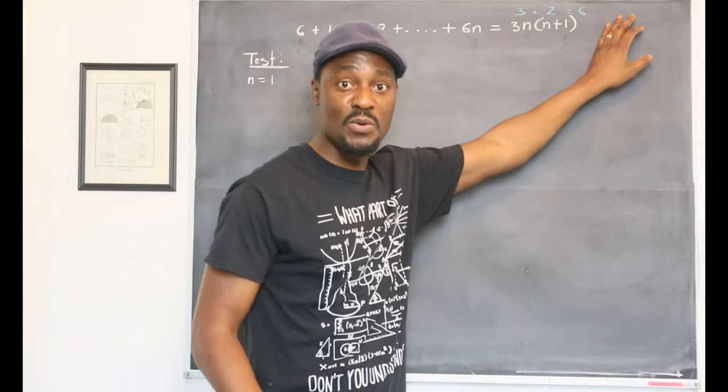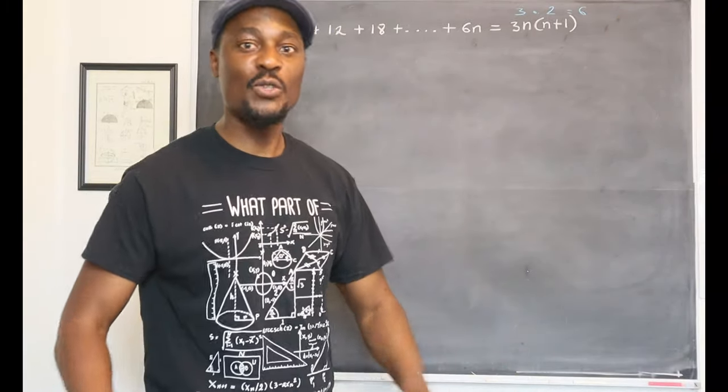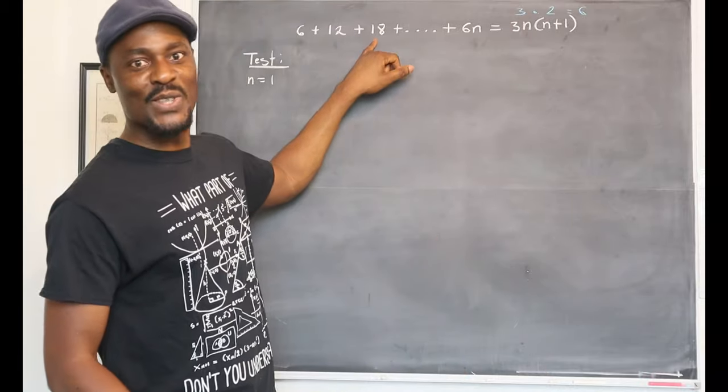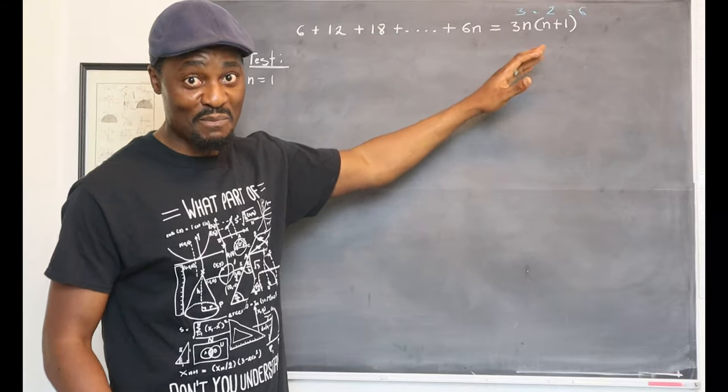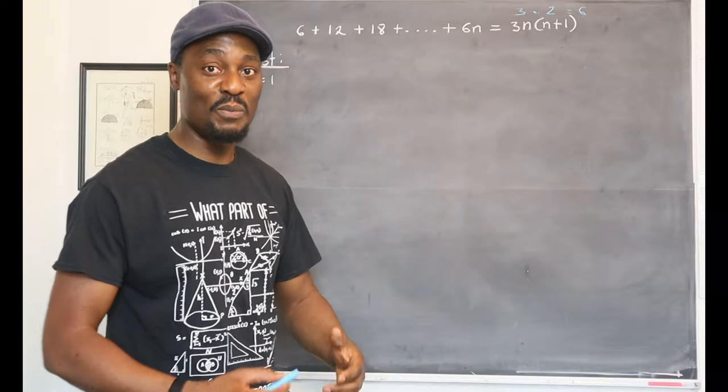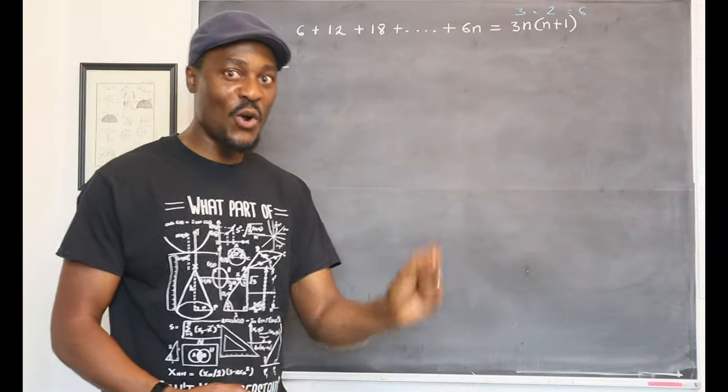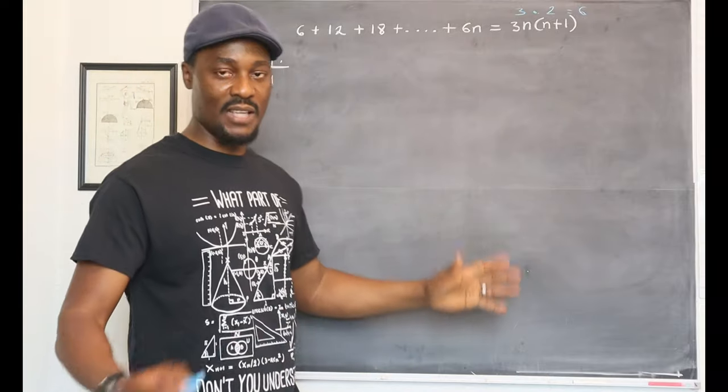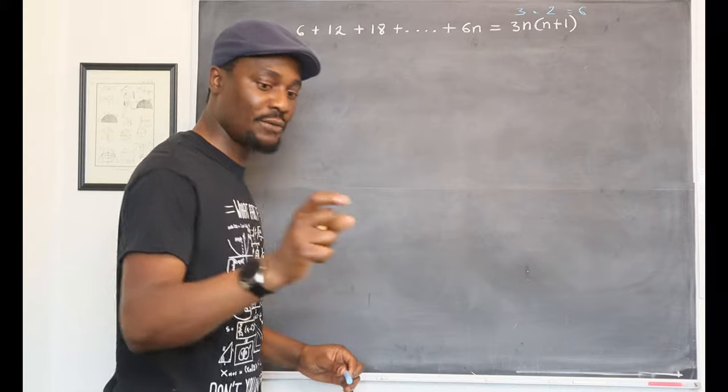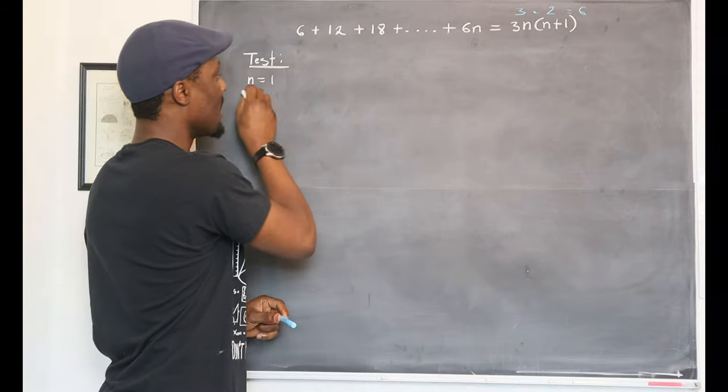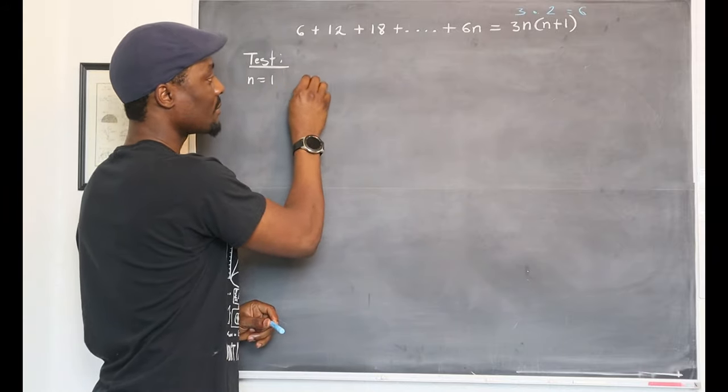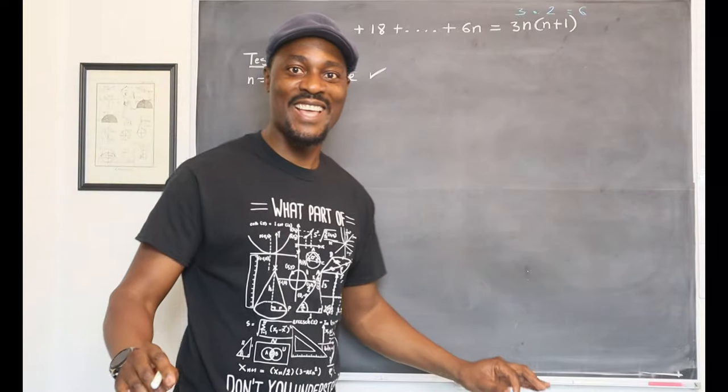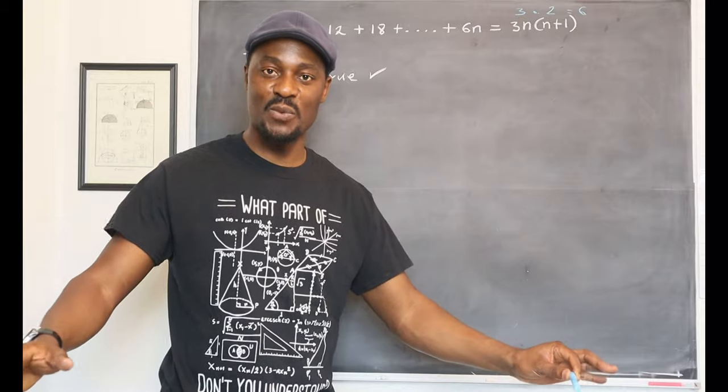It's always good to use the smallest number. Once this is true, that is acceptable. Don't try to be overly fancy. Your chances of making mistakes will be greater because 1 is always easy to manipulate. So once you use 1 in the test, it's acceptable. So all you have to say is n equals 1, true. Don't be too fancy, just say it's true for n equals 1.